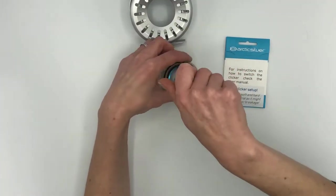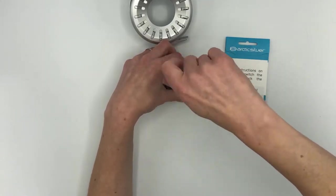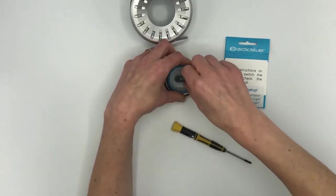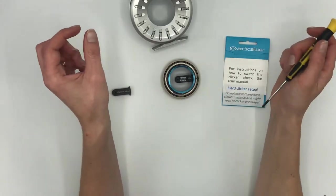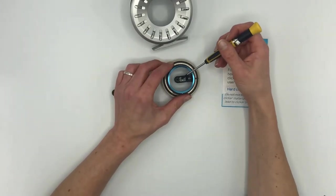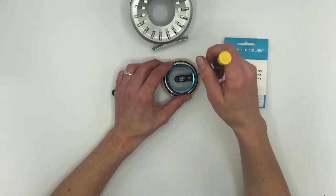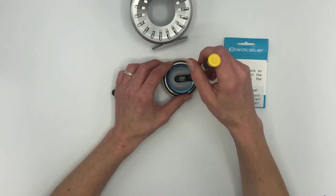Open the clicker cover. Inside you have two screws for the clicker guide and one screw for the clicker.